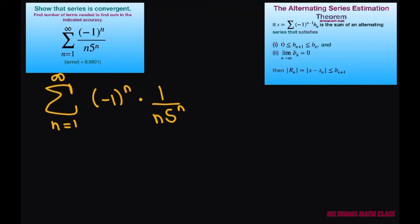This, according to our alternating series estimation theorem, this part is your b sub n. Now, that's to satisfy part 1 and part 2. So let's look and see that.